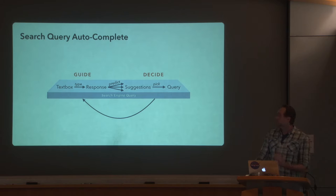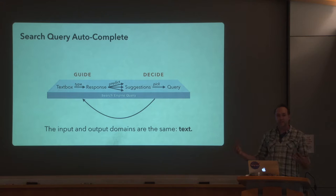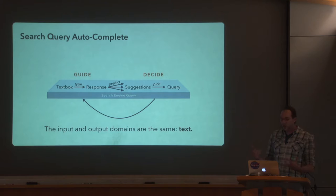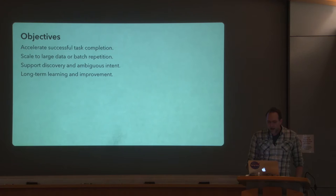What makes this a relatively simplistic microcosm, despite a lot of interesting statistics behind it, is that the input and output domains are the same — we're using text to express text. This has a lot of features that simplify the interaction. One of the questions we'll explore is: what about more complex input-output relations, and how can we take the useful things of this model and apply it in more complicated situations?